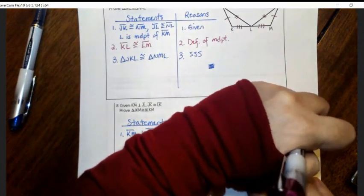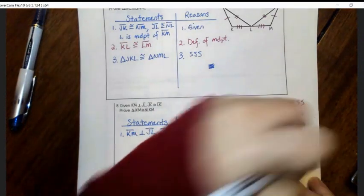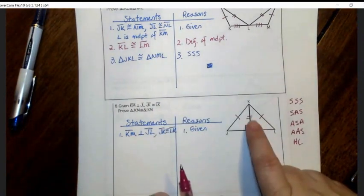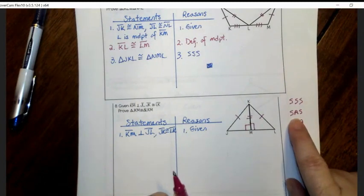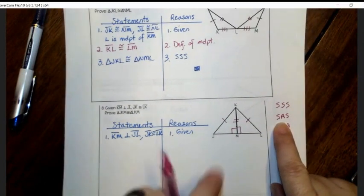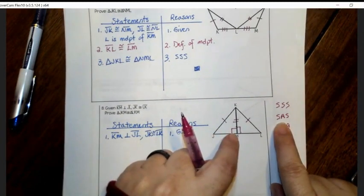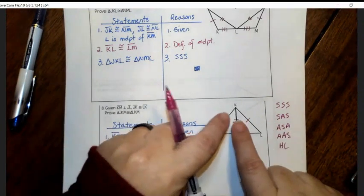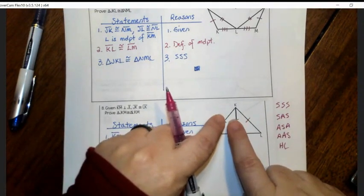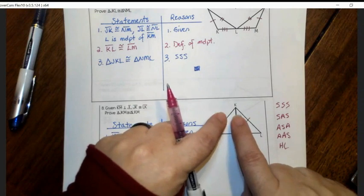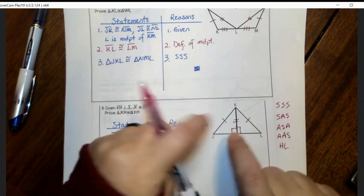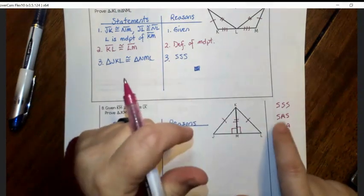Let me write them out real quick. The only one that has two S's for sides and one angle is this one. But that one says the angle has to be between the two sides. And if I put my finger, each finger on one of these two, the angle that's between these two fingers is this one up here. So this is not a picture of SAS.